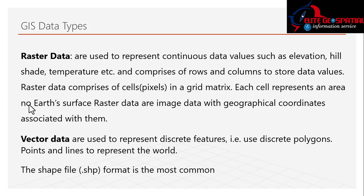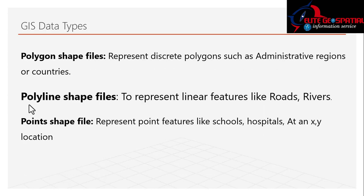Vector data is used to represent discrete features. It uses discrete polygons, points, and lines to represent the real world. The common file formats used for vector data are shapefiles and feature classes. We have polygon shapefiles, which represent discrete polygons such as administrative regions or country boundaries.